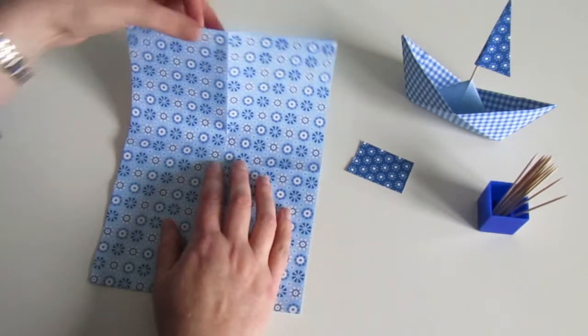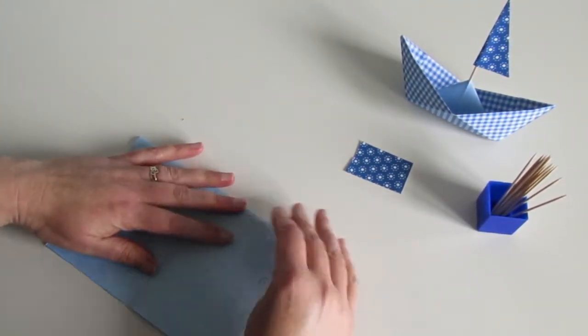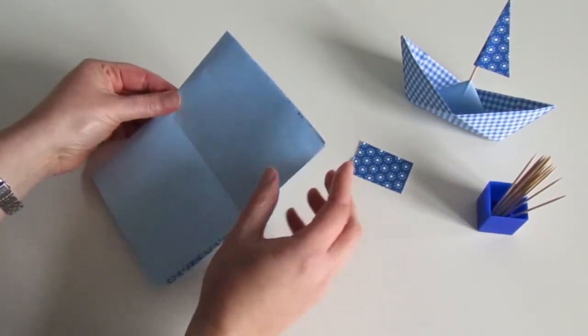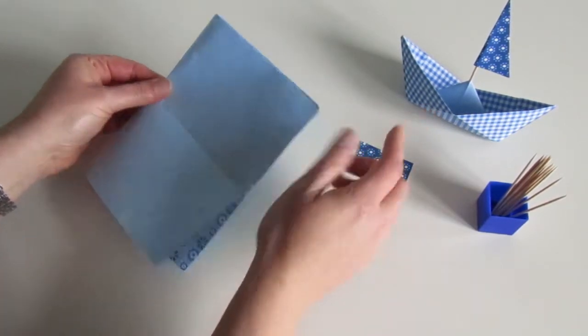So then we're going to turn it over and actually we're going to go back and fold it in half this way. Here we go, and that's because I want the beautiful patterned side of my paper here to be on the outside of my boat.